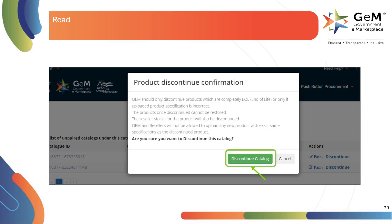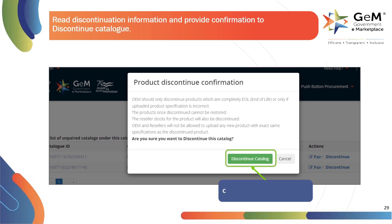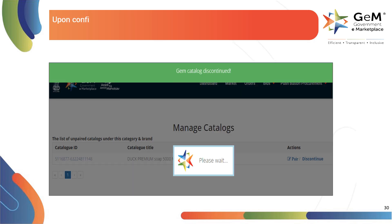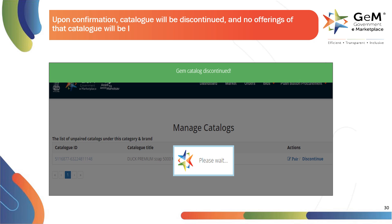Read the discontinuation information and provide confirmation to discontinue the catalog. Click on discontinue catalog to confirm. Upon confirmation, the catalog will be discontinued and no offerings of that catalog will be live in marketplace.